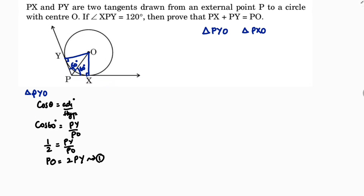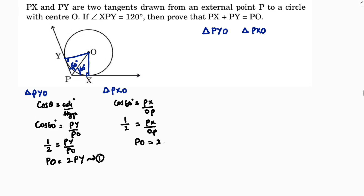Next I will take triangle PXO. I need the relationship between Px and Op. Px is the adjacent side and Op is the hypotenuse, so again I use cos theta. Cos 60 equals Px over Op, which gives 1/2 equals Px over Op. Therefore Po equals 2 times Px. This is equation 2.